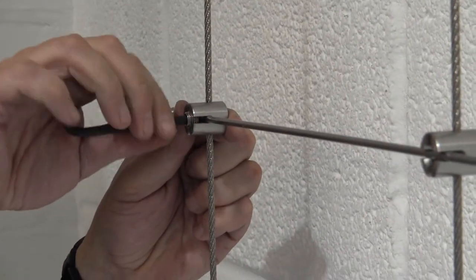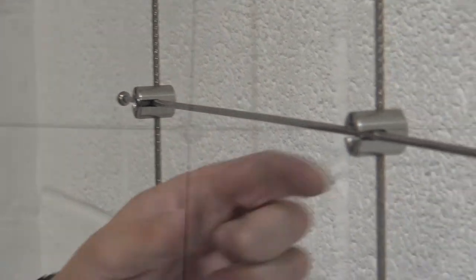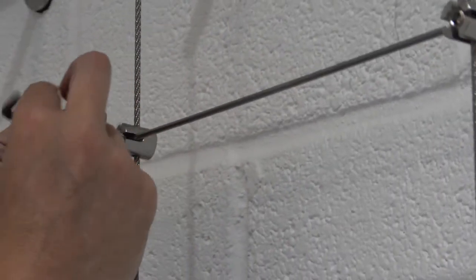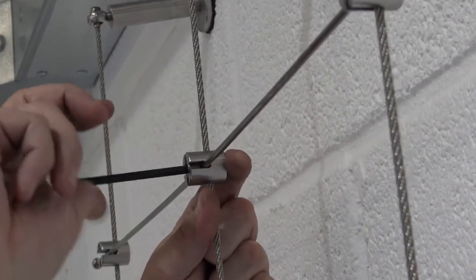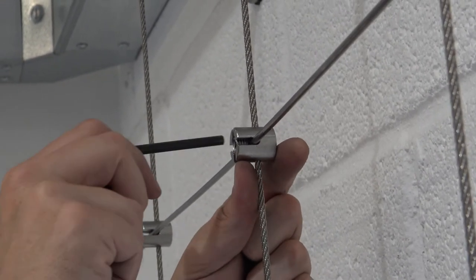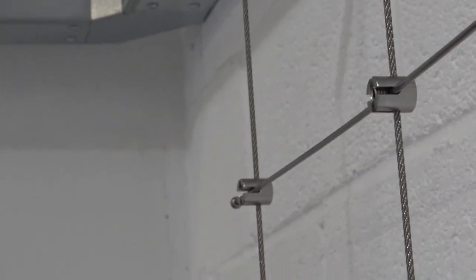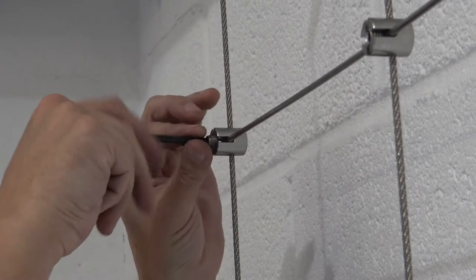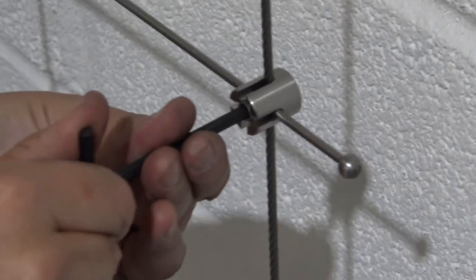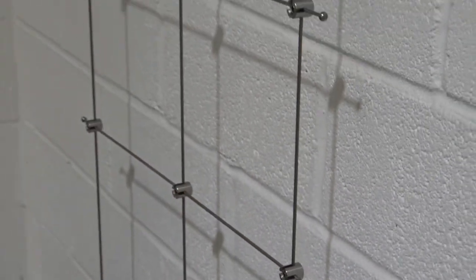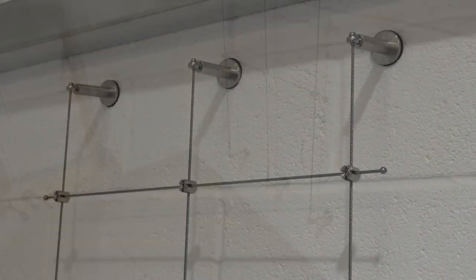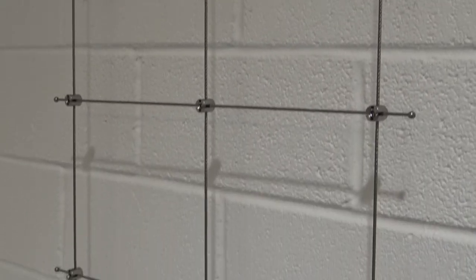Again, only tighten as much as necessary. Don't over tighten; it will only deform the cable and put significant pressure on the rod. This is basically the trellis system installed ready for planting, so you can see the complete setup.